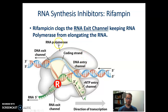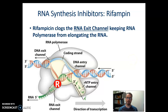Rifampin clogs that RNA exit channel, keeping RNA polymerase from elongating the RNA that it's making. The whole process stops — no RNA gets made. We need RNA to be able to make proteins, so no protein gets made. Proteins perform critically important functions for the cell; cells have to always be able to make proteins. If they can't make proteins, they die.